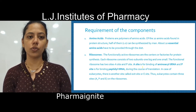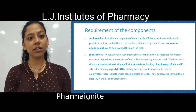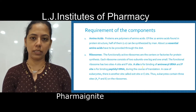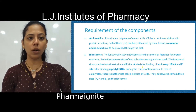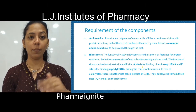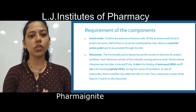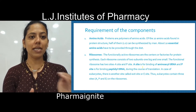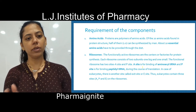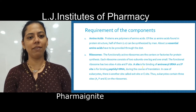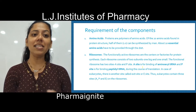Next is the ribosome, which is the center — we can say factory — for protein synthesis. Each ribosome has two subunits: a bigger one and a smaller one. In the case of prokaryotes, the ribosome has two sites: A site and P site. While in the case of eukaryotes, the ribosome has three sites: A site, P site, and E site.